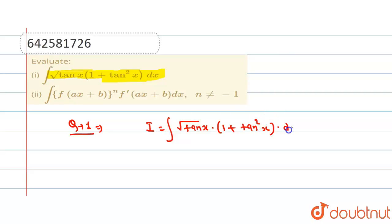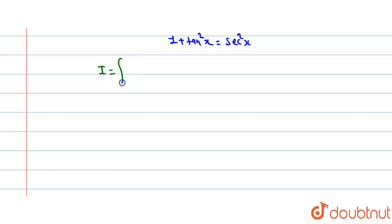Now here we can write 1 + tan²x = sec²x. If we assume tan x = t, we will convert this given function into a more integrable form. So put the value: 1 + tan²x = sec²x. We can write I = ∫ √(tan x) · sec²x dx.